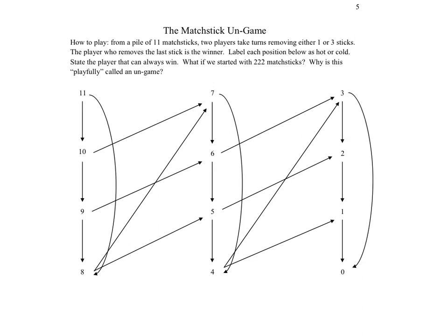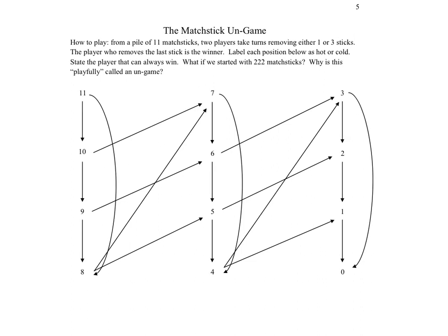There's one more example to try — another version called the matchstick un-game. We'll think about why it might be called that later. Again there are 11 matchsticks, but this time you can remove one or three (in the last version it was one or two). The player that removes the last stick is the winner. Try labeling each position as hot or cold, then we'll state the player that can always win and ask what if we started with 222 matchsticks.